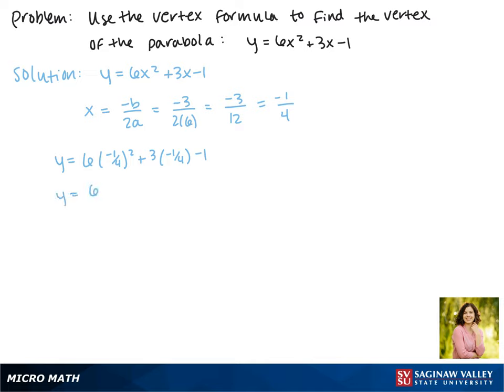Negative 1 fourth squared is positive 1 sixteenth, and then 3 times negative 1 fourth is negative 3 fourths minus 1. Now 6 times 1 sixteenth is 6 sixteenths minus 3 fourths minus 1.